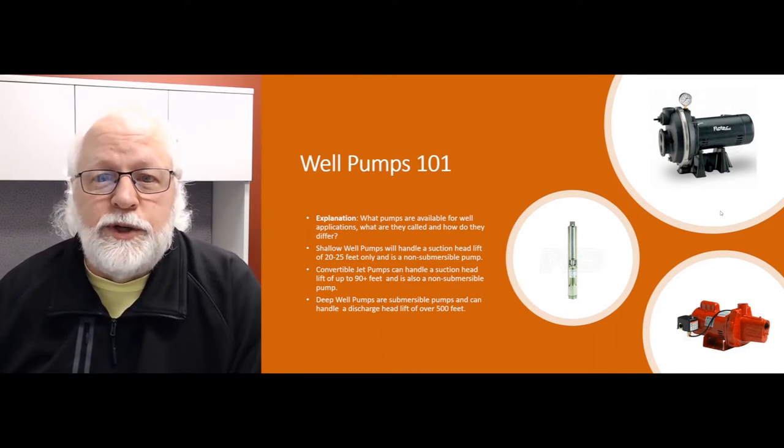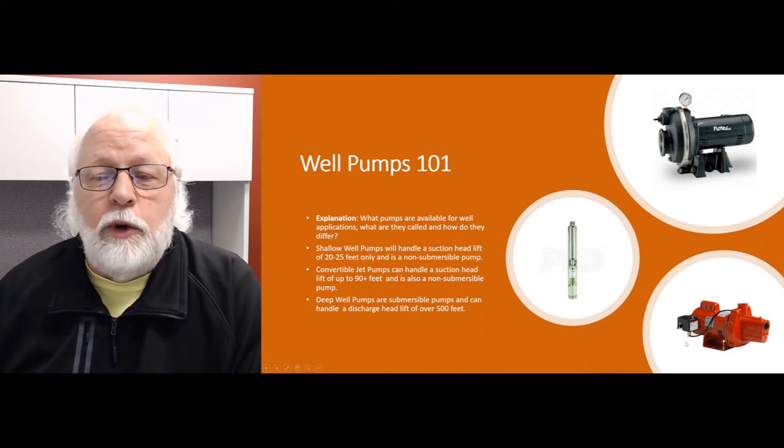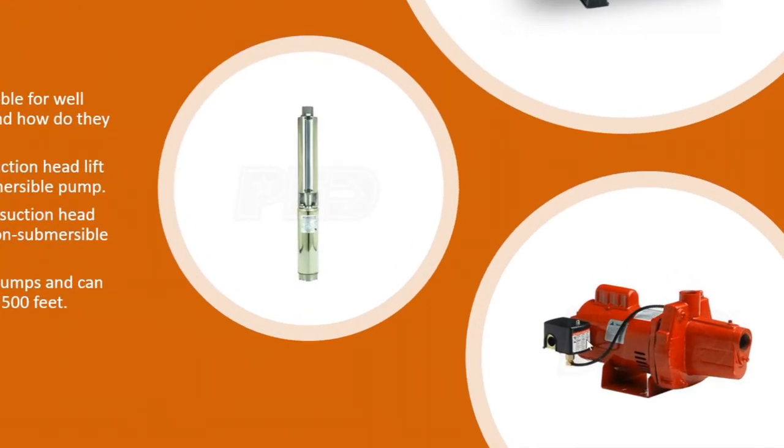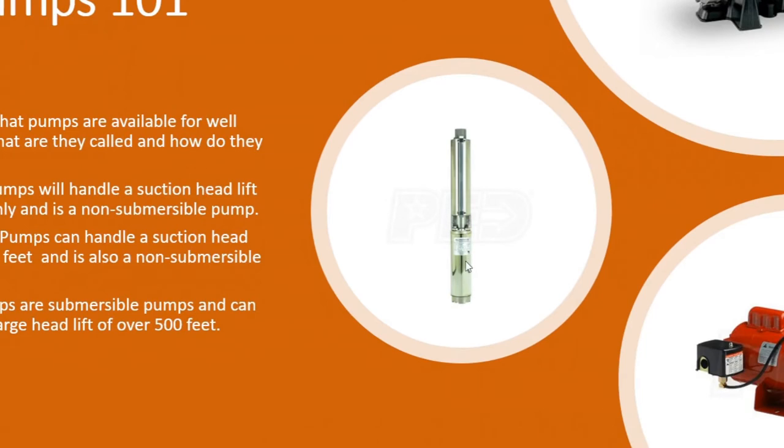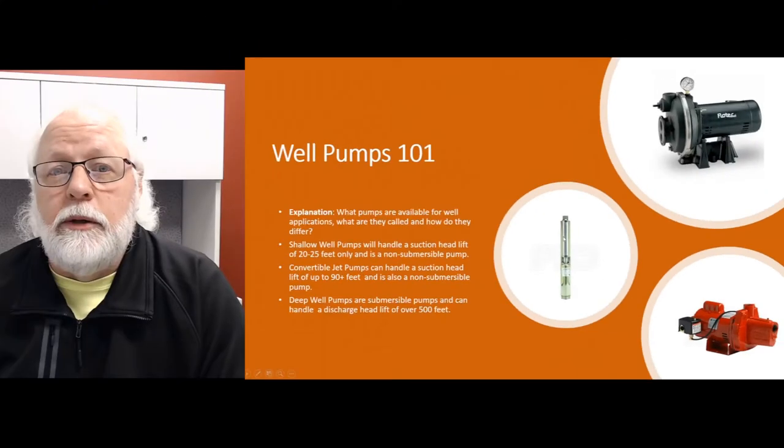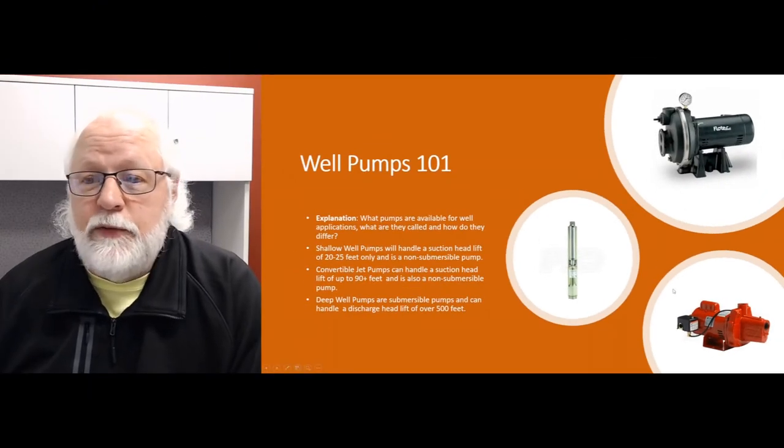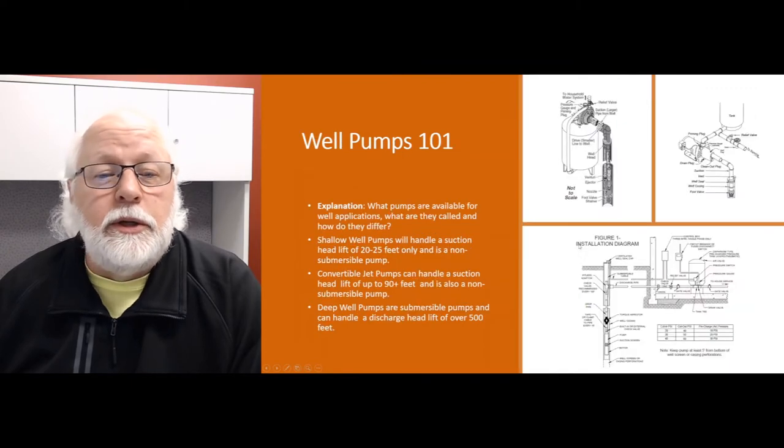What are their specific uses? You've got shallow well pumps that look very similar to the one on the bottom right here. These can handle a suction lift of up to 20 to 25 feet. Convertible jet pumps will handle a suction lift of up to about 25 to 90 feet, sometimes a little bit more. Deep well pumps are actually submerged in the well and in the water. They don't need suction lift because they're in the water, but they can discharge water well over 500 feet. That's really the main difference on these kinds of pumps.